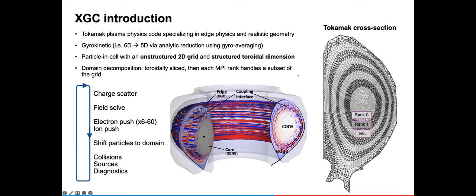On the toroidal dimension, we use a structured grid, a series of planes. We use domain decomposition where there's these toroidal slices and each MPI rank is in charge of a subset of the grid. These alternating fake colors show the different MPI ranks. The basic algorithm is that particles scatter their charge onto the grid, then you solve for the electric field. Using the electric field, you push the electrons and ions to their new position at the next time step. Electrons can be pushed multiple times for each field solve. Because of this subcycling, the electron push ends up being our most expensive kernel usually. Then we shift particles to the next domain, and then there are a number of other operations that get done after that.